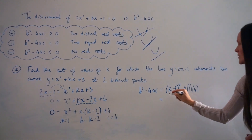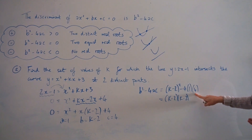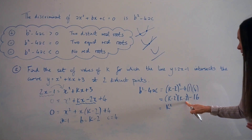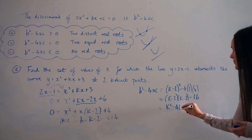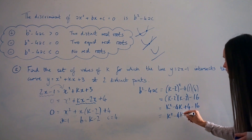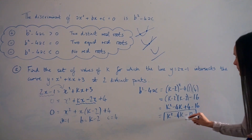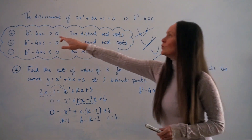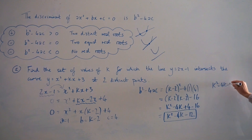Expanding the brackets: k minus 2 times k minus 2. And negative 4 times 1 times 4 equals negative 16. Expanding: k times k is k squared; k times negative 2 is negative 2k; negative 2 times k is also negative 2k; so negative 2k minus 2k is negative 4k; and negative 2 times negative 2 is 4. Then we subtract 16. So 4 minus 16 is negative 12. The discriminant is k squared minus 4k minus 12.